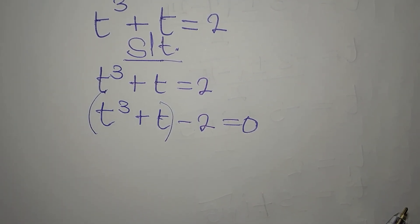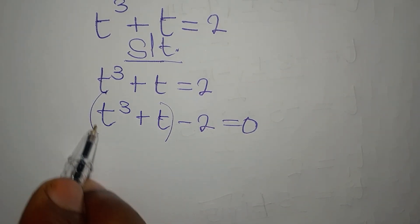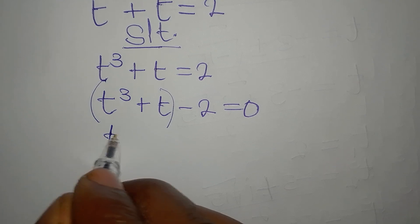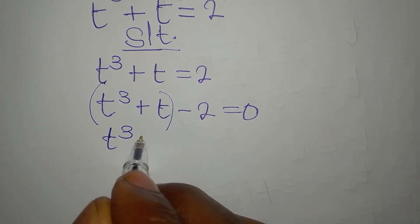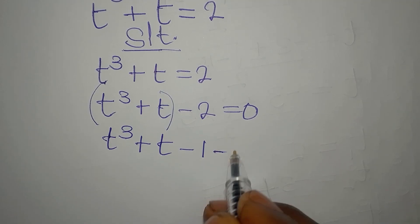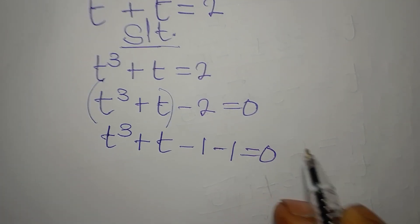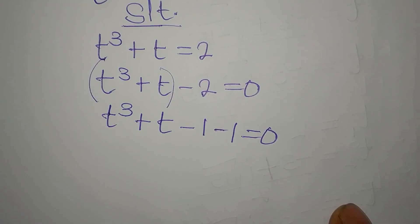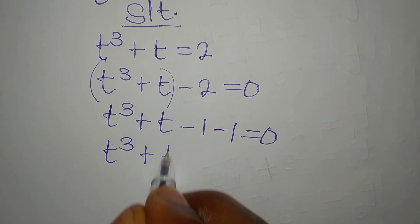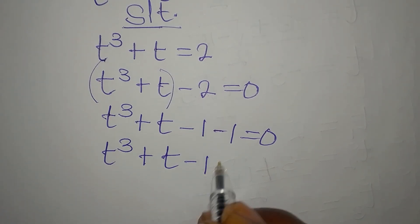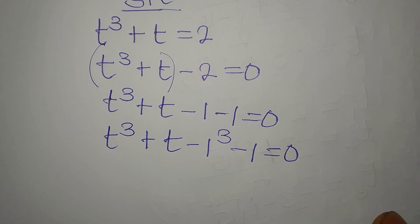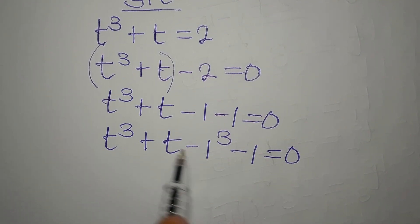The whole of this should equal 2, so if we're going to subtract 2 to get 0, that should be true. Let's express this by rewriting: t cubed plus t minus 1 minus 1 equals 0, because minus 1 minus 1 is minus 2. Then we write t cubed plus t minus 1 cubed minus 1 equals 0.